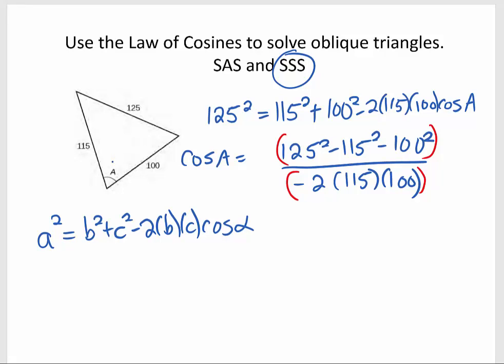So now I'm going to grab my calculator and do inverse cosine of that expression. And it looks like for angle A, I'm going to get 70.7 degrees.